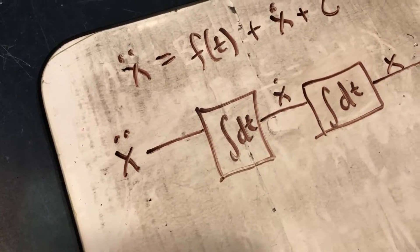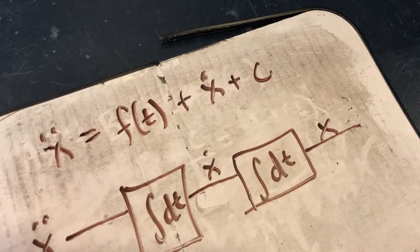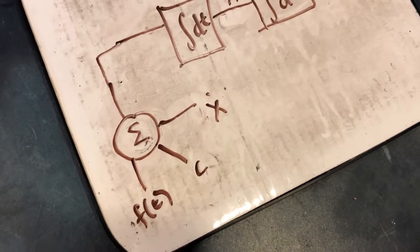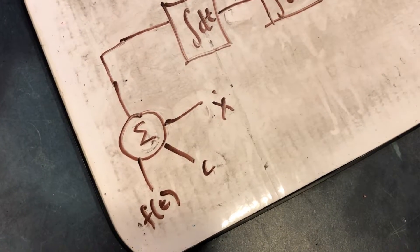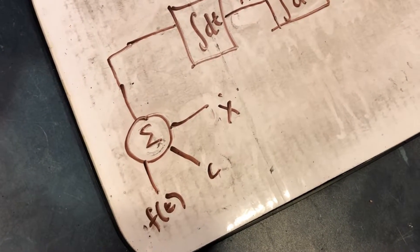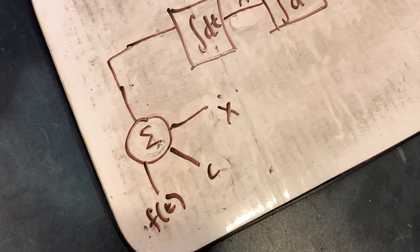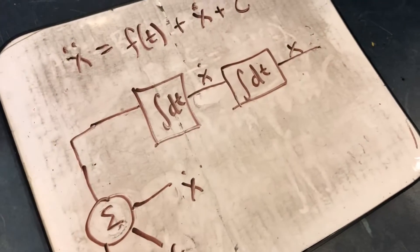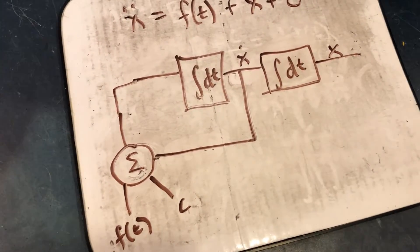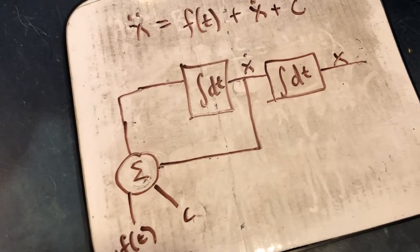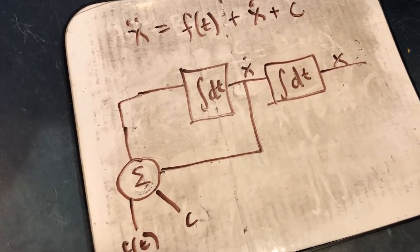But what we know is that the second order term is just the summation of these three values. So what we can do is just take those three values and send it through the integration. But the problem here is that we have that first order term and technically we don't know that term when we do this calculation. So we have to feed it back from this integral or this block diagram. So all we have to do is feed that value back into the summation and integrate it and then we have our equation solved.